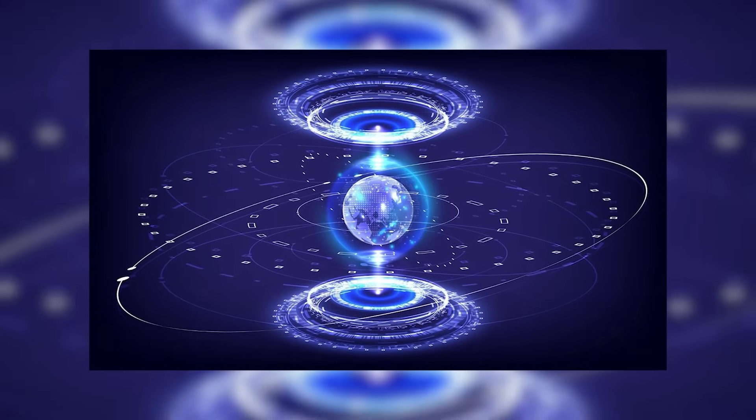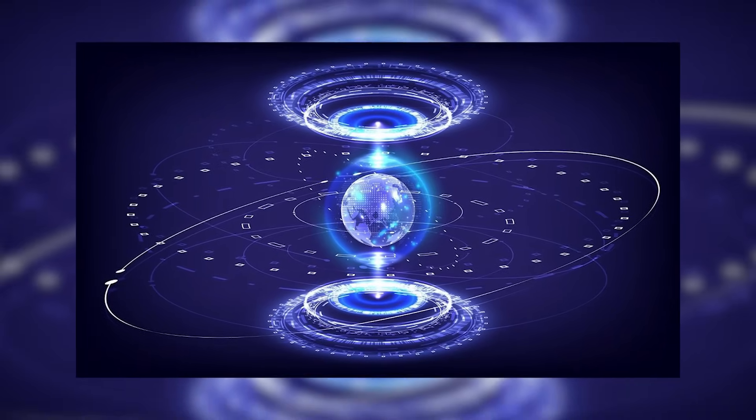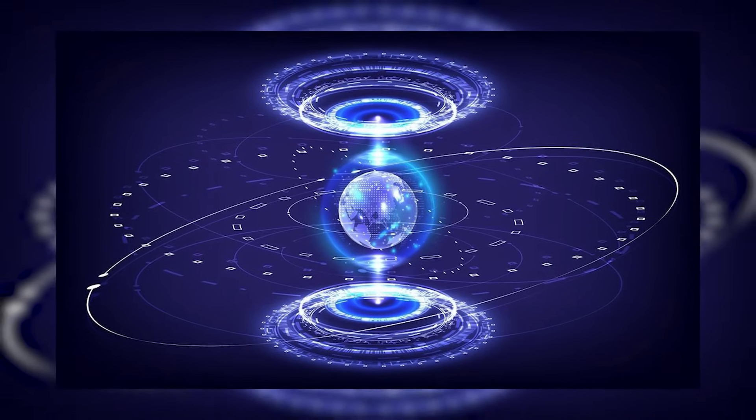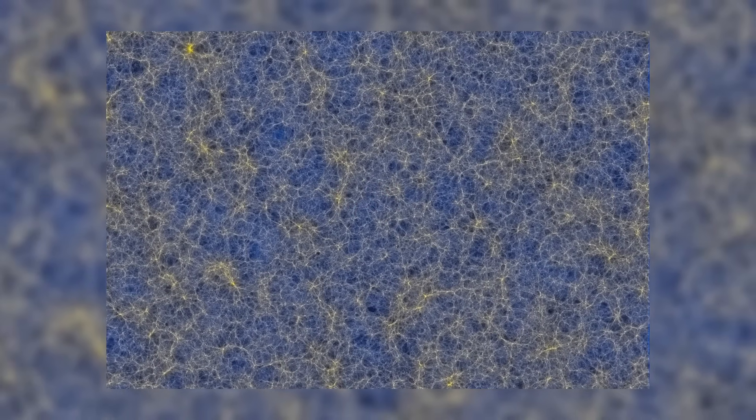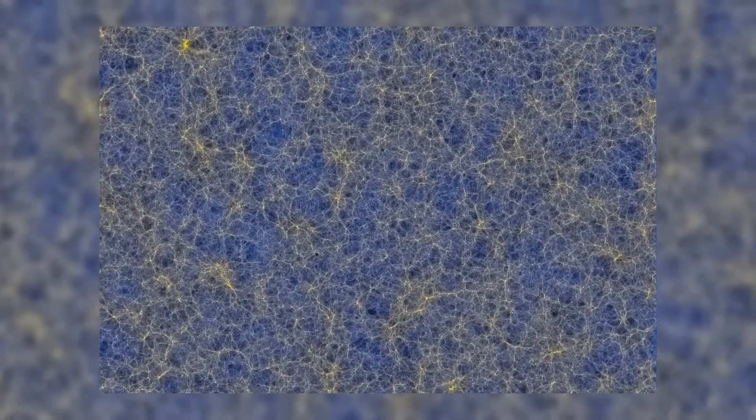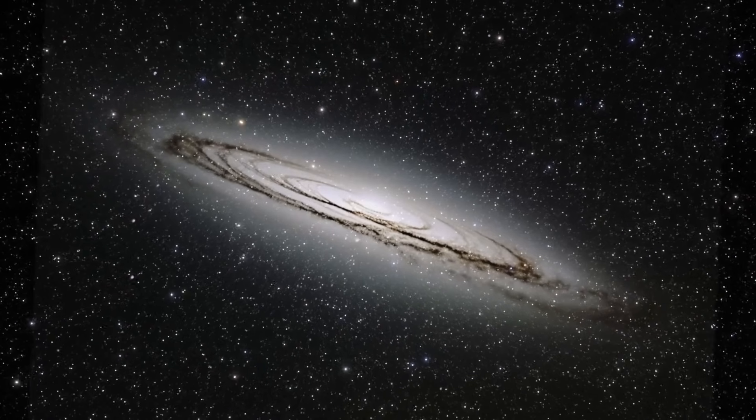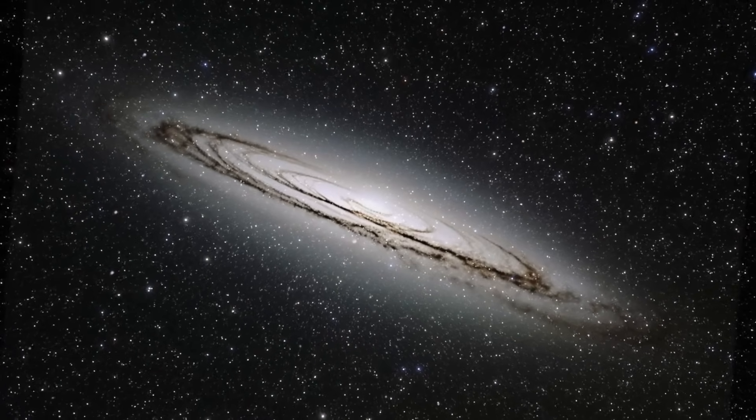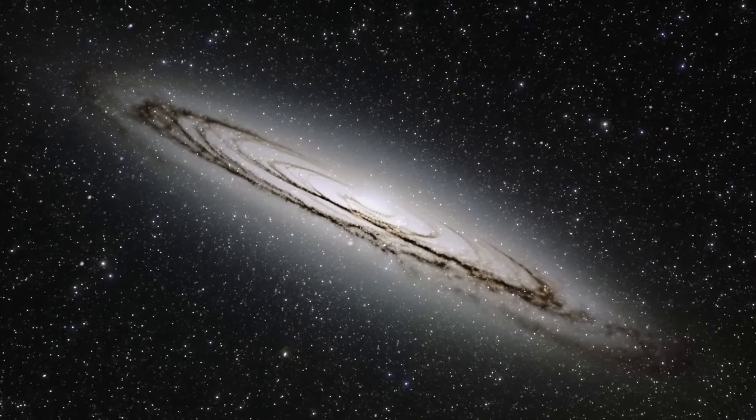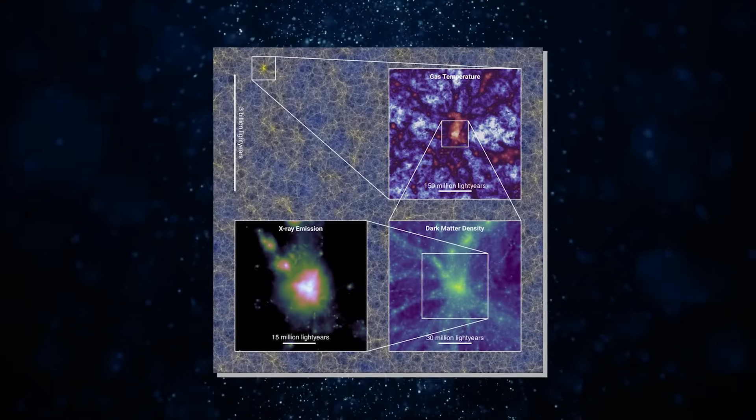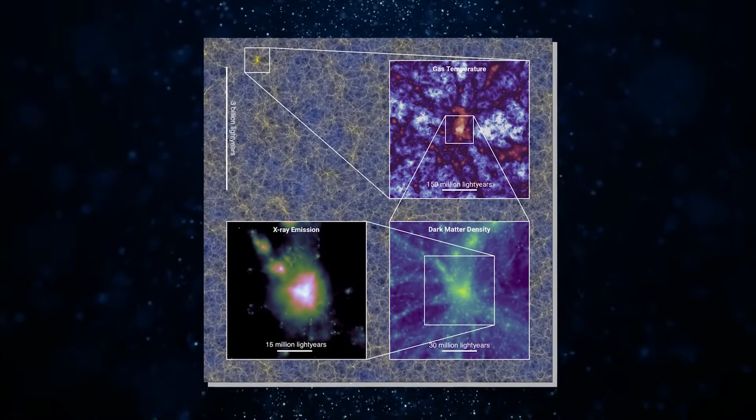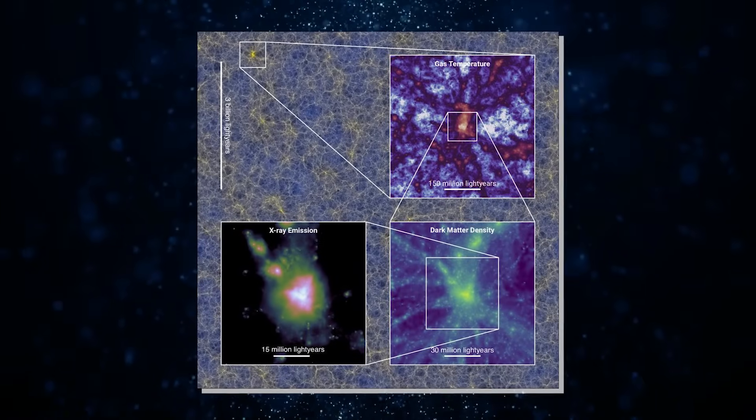The Flamingo project leveraged a supercomputer to execute these simulations across varying cosmic volumes and resolutions. Notably, the most extensive simulation involved an astonishing 300 billion resolution elements, each akin to the mass of a small galaxy within a cubic volume spanning 10 billion light years. This achievement is considered the most extensive cosmological computer simulation that includes ordinary matter. Matthew Schaller, also from Leiden University, played a pivotal role in the success of this endeavor.